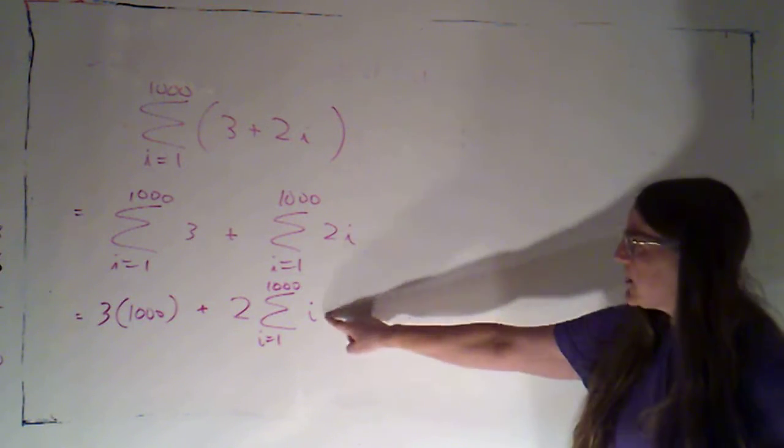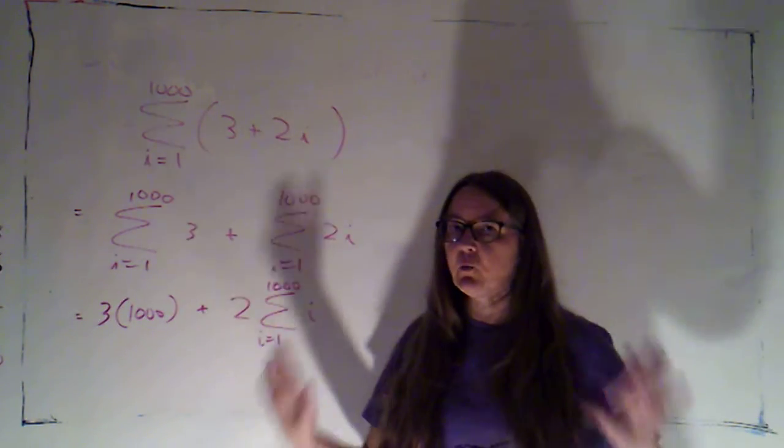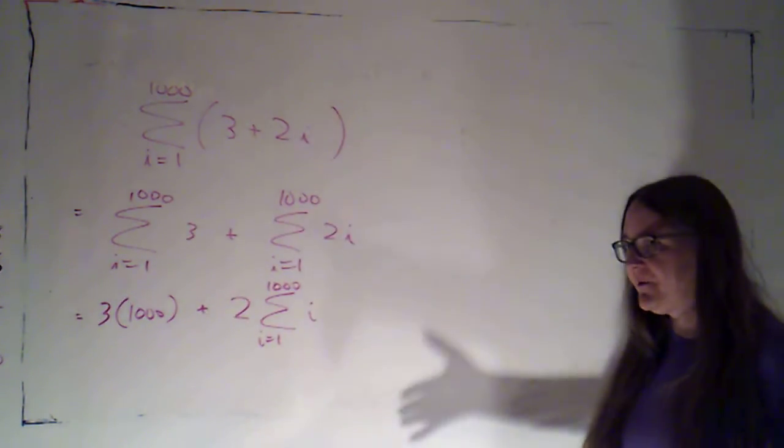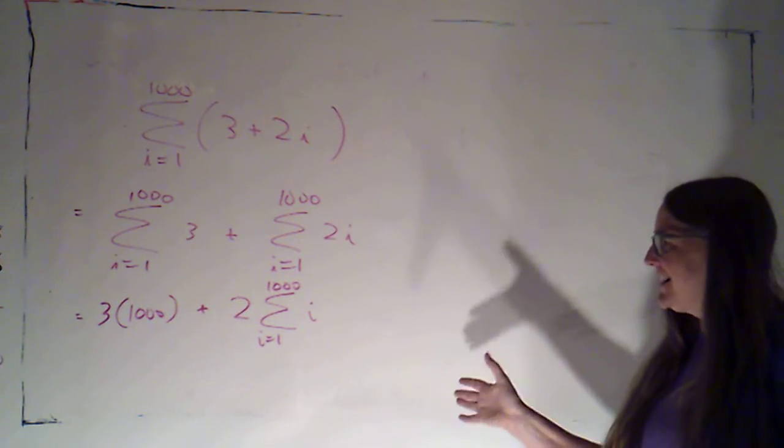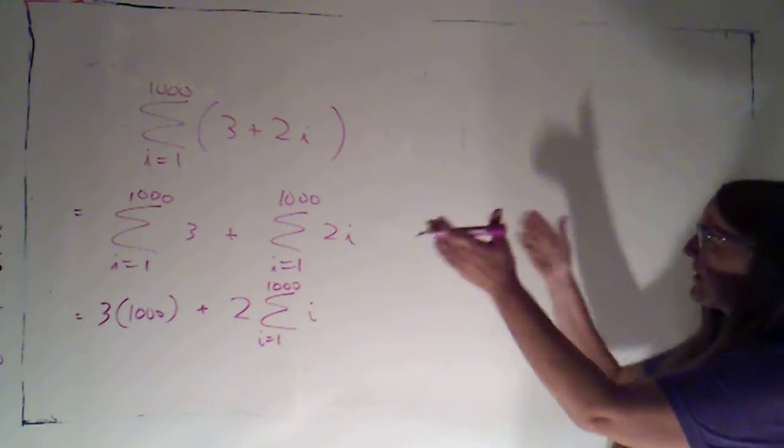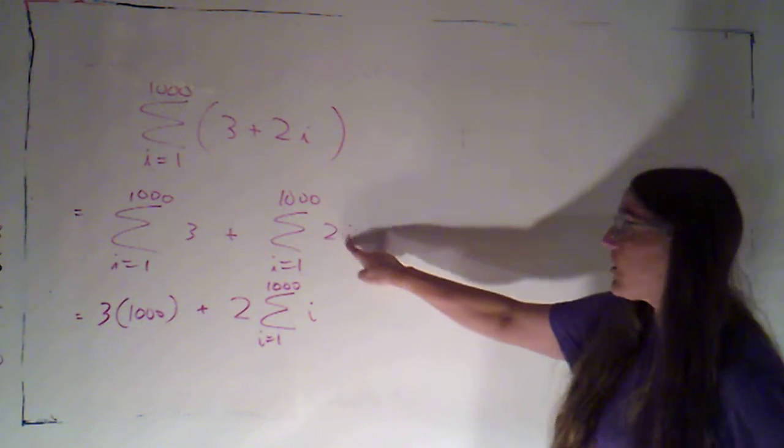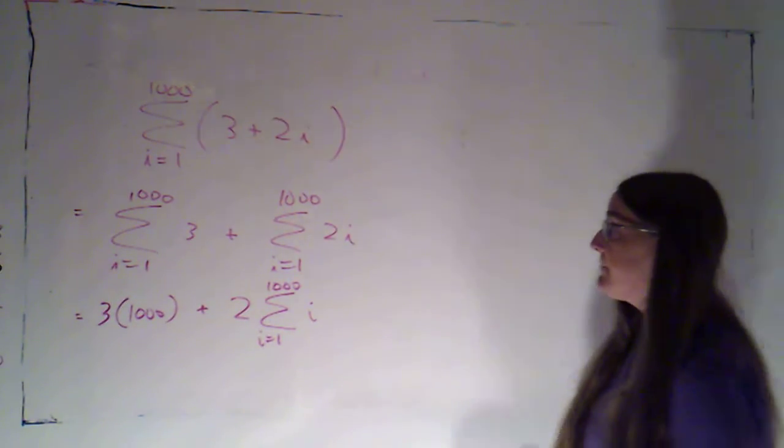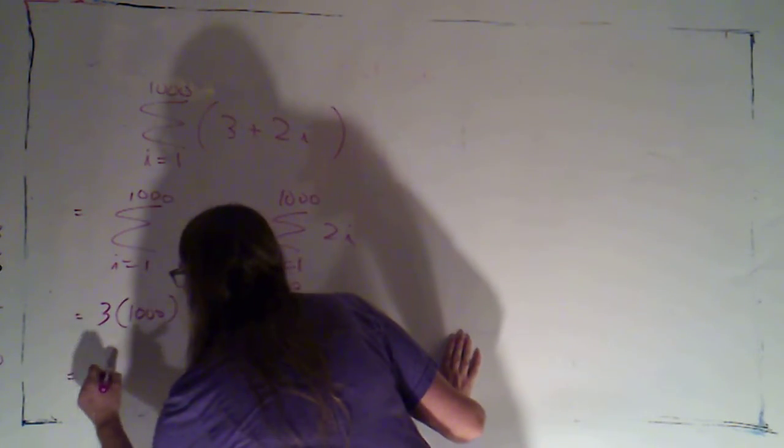So I want to get it so that all that I have on the inside is one of those four things: a number, an i, an i squared, or an i cubed. So I have to break them apart, and I have to break apart this constant and the i. But now I can say, okay, so that's three thousand.